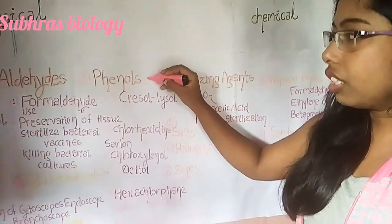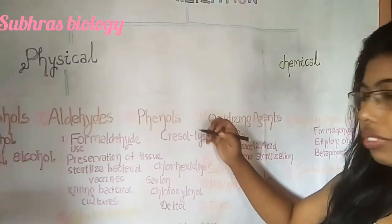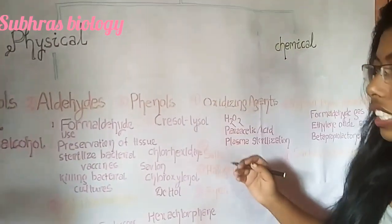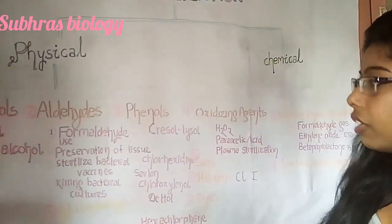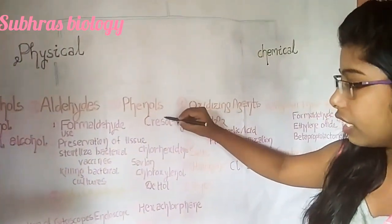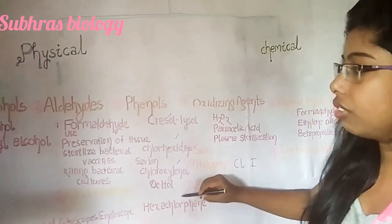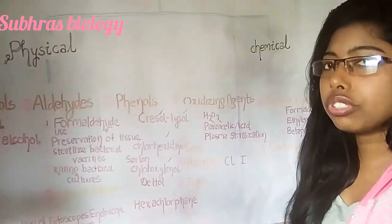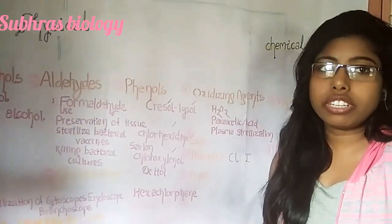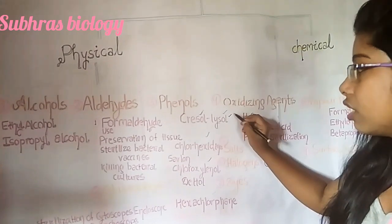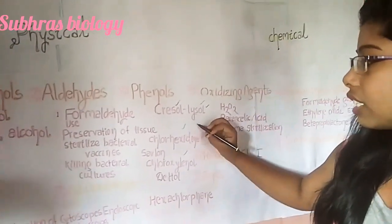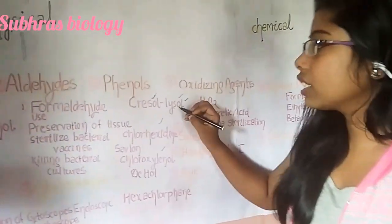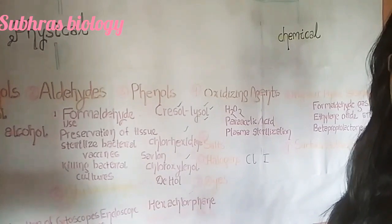The third chemical agent is phenol. Phenol is bactericidal in nature — it doesn't kill spores, viruses, or fungi. Phenol derivatives include cresol, chlorhexidine, chloroxylenol, and hexachlorophene. Lysol is a main example — it is a solution of cresol in soap, commercially available. Lysol is used for cleaning glasswares and floors.